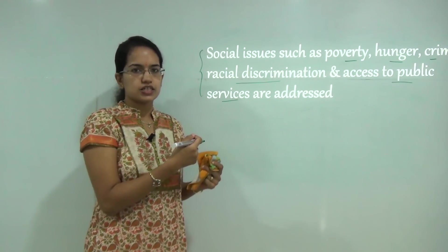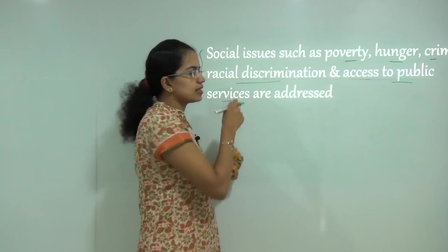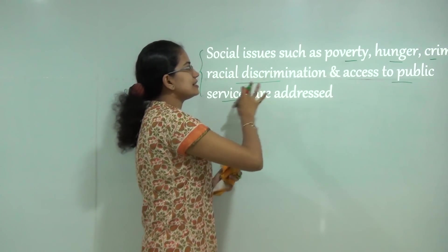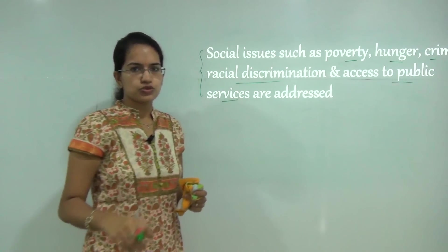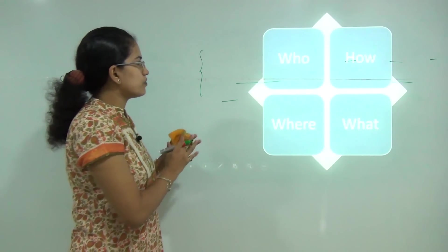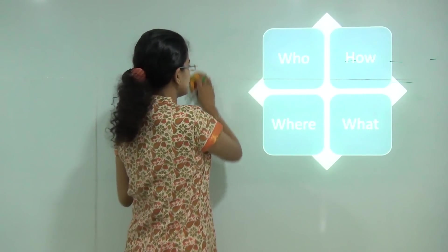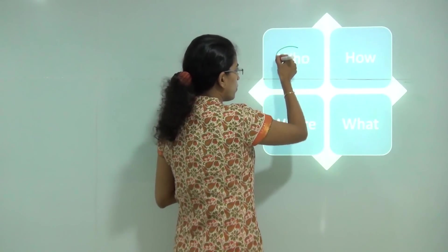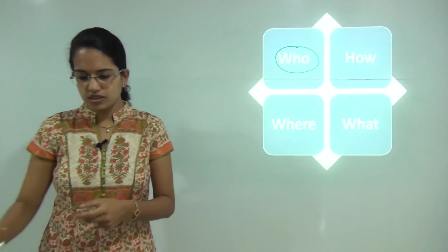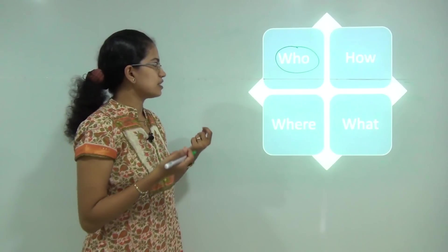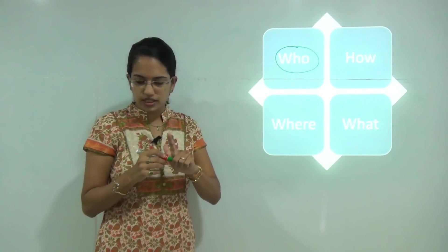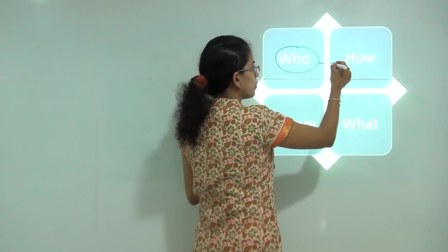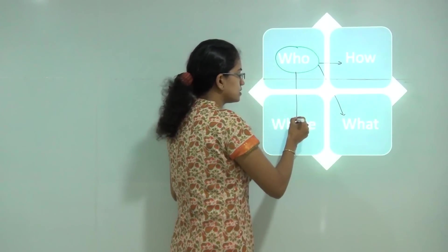Homelessness is another issue covered under social issues, and providing medical facilities to all and everyone would be another kind of social issue addressed under welfare approach. Now why and how these social issues got addressed can be understood through a simple diagram. The diagram focuses on the population and three key questions: who gets how, who gets what, and who gets where.